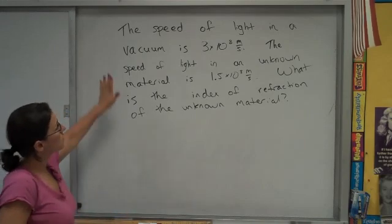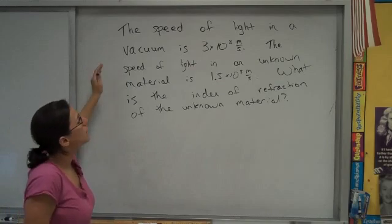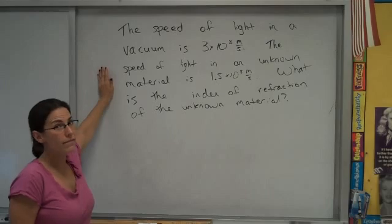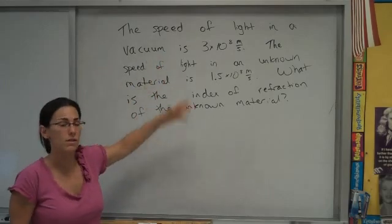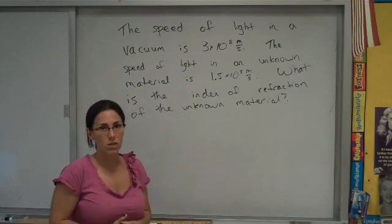This problem says the speed of light in a vacuum is 3 times 10 to the 8 meters per second. The speed of light in some unknown material is 1.5 times 10 to the 8 meters per second, half as slow as in the vacuum. What is the index of refraction of the unknown material?